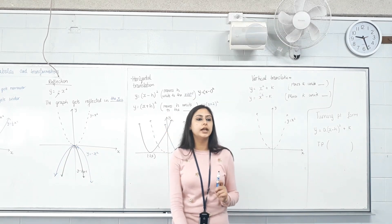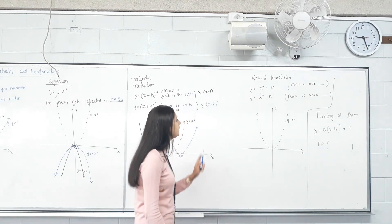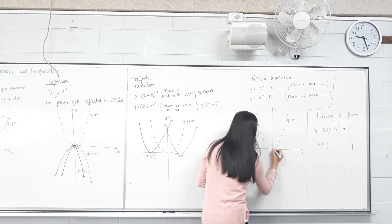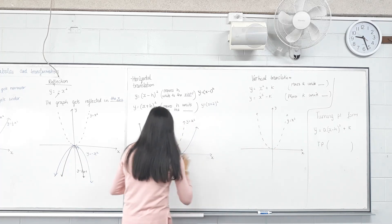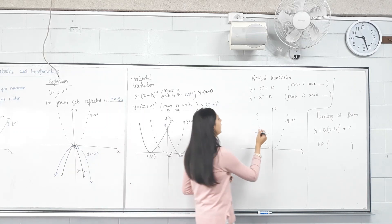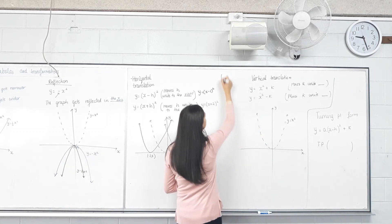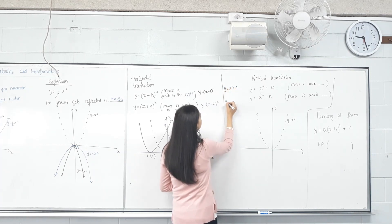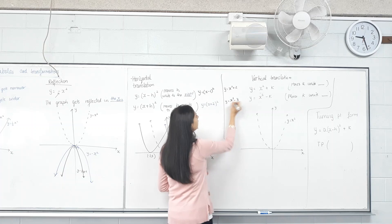Alright, delete these two and only leave y equals x squared on your graph page, please. Now let's see the last ones. I want you to sketch y equals x squared plus 2 and y equals x squared minus 3.